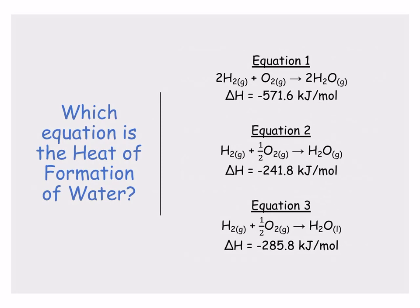Equation 2 cannot be correct either because it would have H2O in its gaseous state, and we know at 25 degrees it's in its liquid state. Therefore, the heat of formation of water would have to be equation 3, and the delta H in that case would be negative 285.8 kJ per mole.